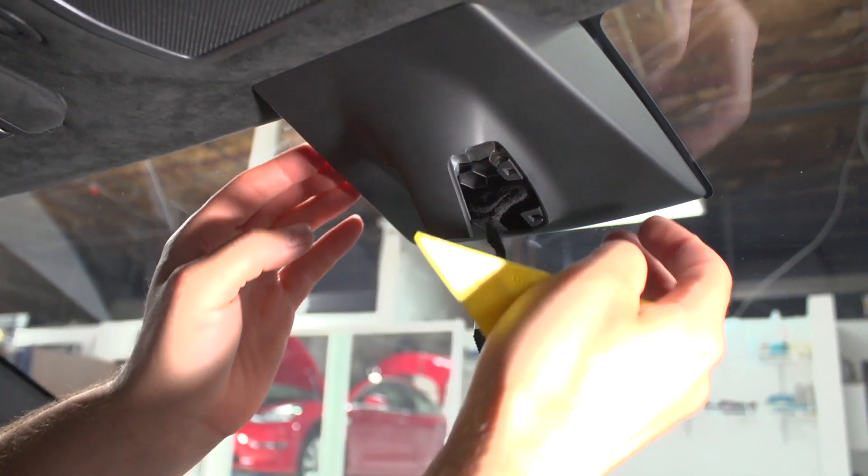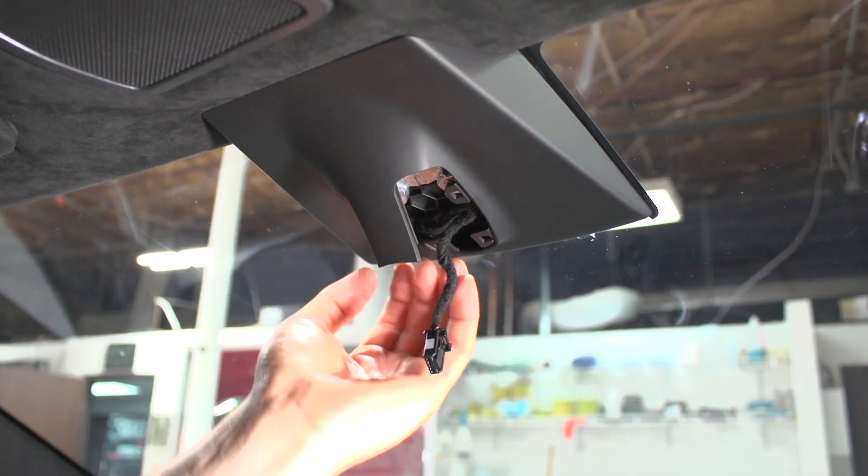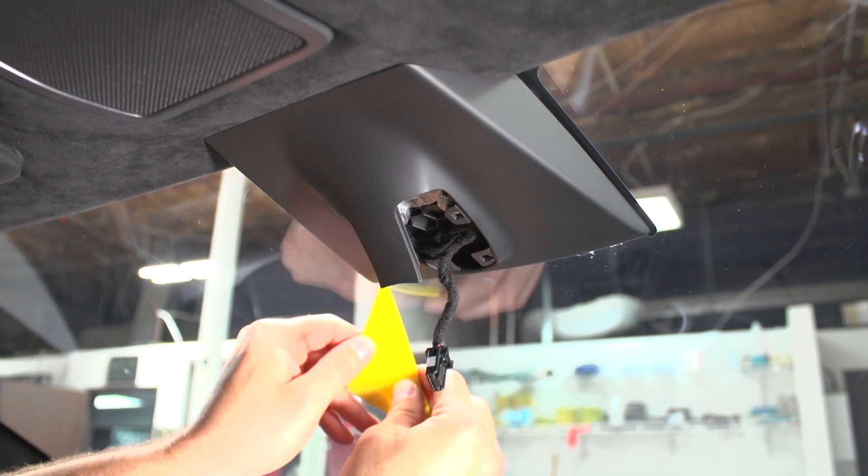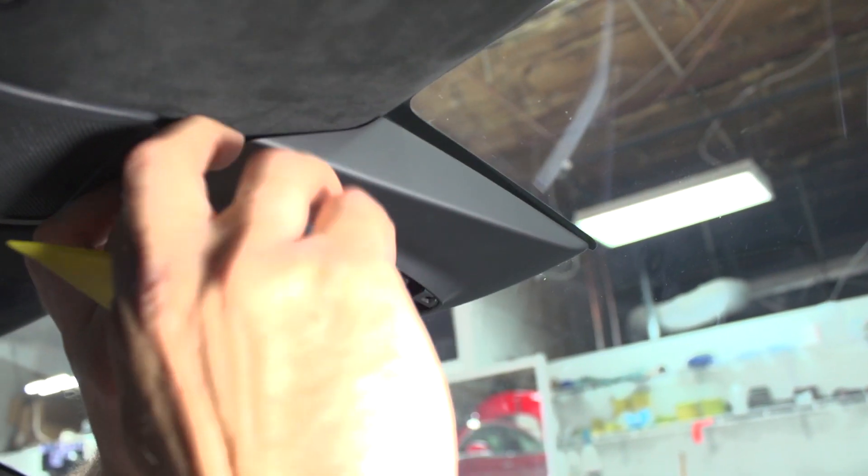The next thing we're going to do is we're going to pull this plastic cover off and there's just four little tabs that hold it on. So once we get our fingernails under it, it just kind of snaps off.